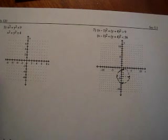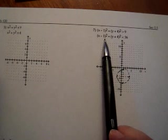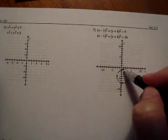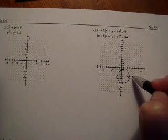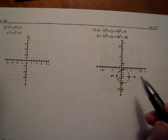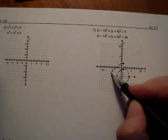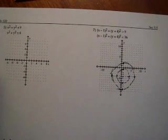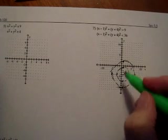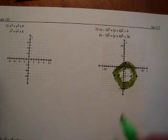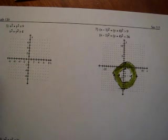The second inequality, replacing less than with an equal sign, is also a circle centered at the same point (1, -4) but with a radius of 6. I draw this as a dashed circle as well. Testing a point shows I should shade inside the larger circle. So the solution region is inside the larger circle but outside the smaller one — a donut shape, or a washer as we call it in calculus.